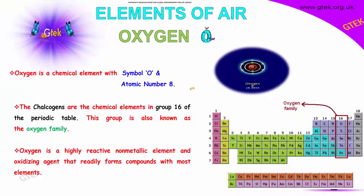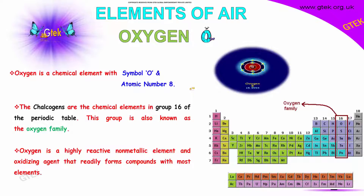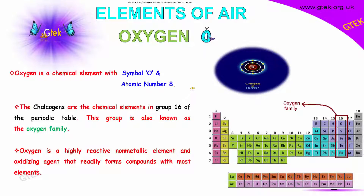Now we will look into oxygen. In the periodic table, the 16th group is the oxygen family. Oxygen is the chemical element with the symbol O and atomic number 8. The chalcogens are the chemical elements in group 16 of the periodic table, and this group is also known as the oxygen family.